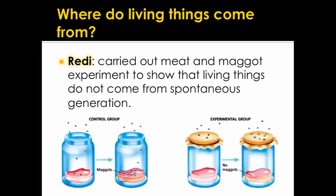Redi was another scientist that performed an experiment on where living things come from. He carried out a meat and maggot experiment to show that living things do not come from spontaneous generation. He set up two jars with meat inside to show that maggots, or baby flies, don't come from meat — they come from flies. His control group was a jar with meat and no cover, and his experimental group had a jar with meat with a cover. After a couple of days, maggots appeared only where flies were able to get into the jar. Maggots were found on top of the covered jar, proving they came from the flies, not from the meat itself.